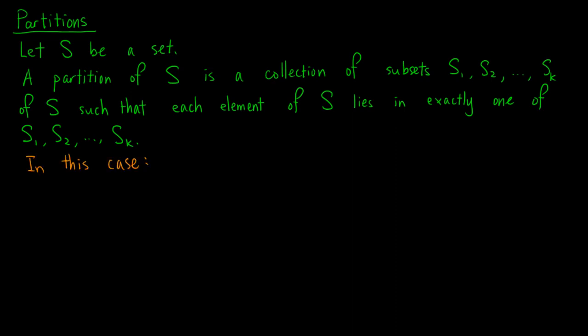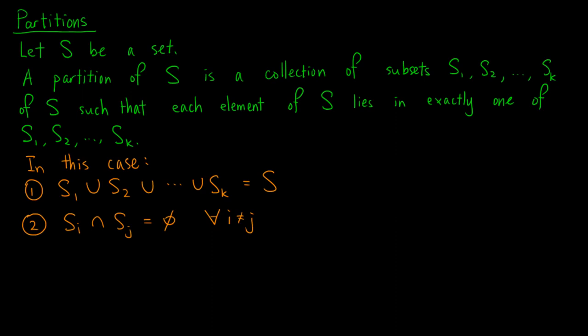There are three implications. The first one is that if we take the union of S1, S2, up to Sk, it will be equal to the whole set S. Secondly, the intersection of Si and Sj is empty whenever i is not equal to j. In other words, the subsets are pairwise disjoint.